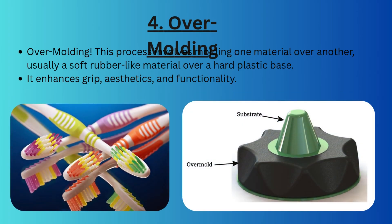Next we have overmolding. If you see a toothbrush with a rubber grip, it is generally made using the overmolding process. This process involves molding one material over another — adding a soft layer over a hard plastic base — which enhances the grip, aesthetics, and functionality of the part. Overmolding is used for tool handles, medical devices, and electronic casings where grip and aesthetic requirements are needed.